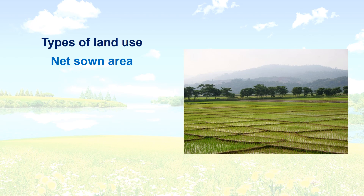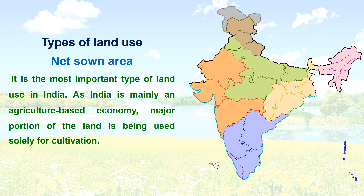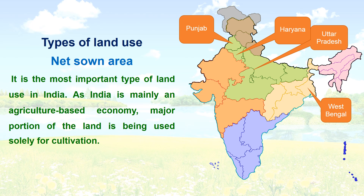Types of land use — Net Sown Area: It is the most important type of land use in India. As India is mainly an agriculture-based economy, a major portion of the land is used solely for cultivation. India ranks second in the world with respect to the extent of area under cultivation, after the USA. The total cultivation area in Punjab, Haryana, West Bengal, Uttar Pradesh and Bihar is more than 60%.